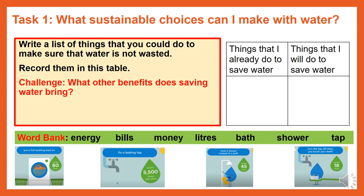Your first task is: what sustainable choices can I make with water? Write a list of things that you could do to make sure that water is not wasted, and record them in a table. Divide your page into two: on the left, write things that I already do to save water, and on the right, things that I will do to save water.